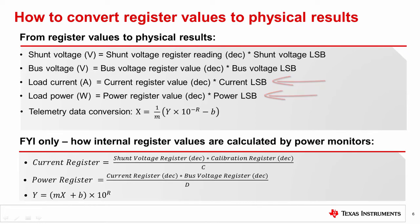It should be noted that in some datasheets, such as the INA233, telemetry data conversion equations are provided alongside the coefficients m, b, and r for current, voltage, and power, respectively. These two formats are equivalent. Either can be used, and they produce identical results.